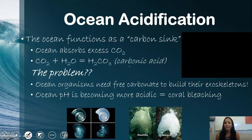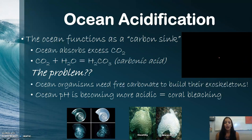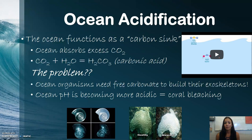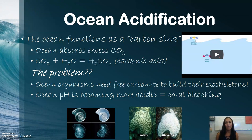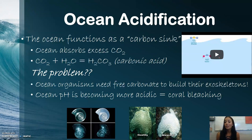Ocean acidification is a growing problem. The ocean is absorbing excess CO2, producing carbonic acid. Ocean organisms need free carbonate to build their exoskeletons, but as ocean pH becomes more acidic, this becomes harder. This is resulting in coral bleaching, which we'll focus on more.